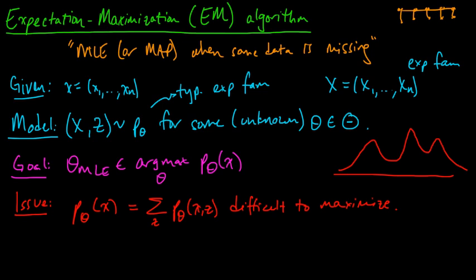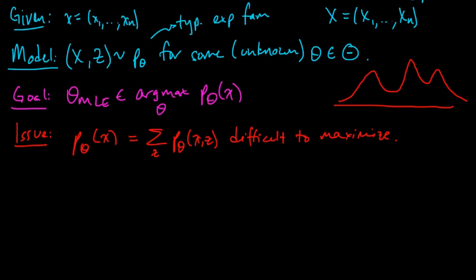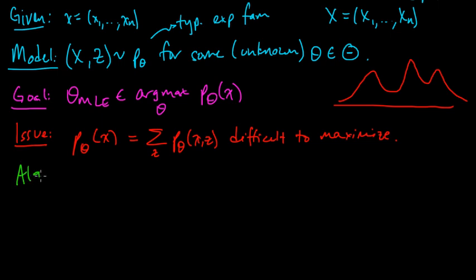So that's the problem. So what's the solution? The solution, according to EM, there are other solutions, but the EM algorithm addresses this by iteratively improving your estimate of this parameter theta in the following way. So you first initialize theta to some theta naught, some theta zero. And then for t equals zero, one, two, etc.